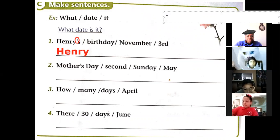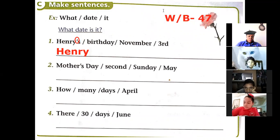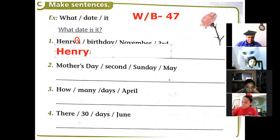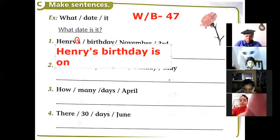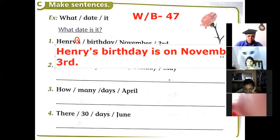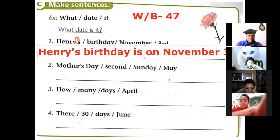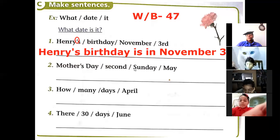Henry's birthday — it's his birthday and nobody else's. We are on workbook page 47. Henry's birthday is in November third. And now: Mother's Day, second Sunday, May — what is the correct sentence?